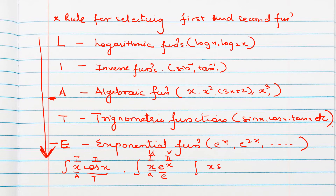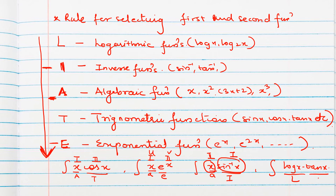For x·sin⁻¹x, x is algebraic and sin⁻¹x is inverse — inverse comes before algebraic in LIATE, so sin⁻¹x is the first function and x is the second. For log(x)·tan(x), L comes before T, so log x is the first function and tan x is the second function. This is the idea to select first and second function in integration by parts.